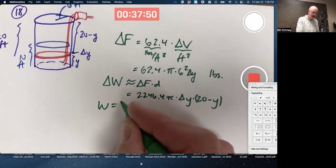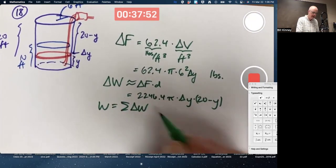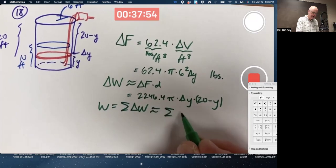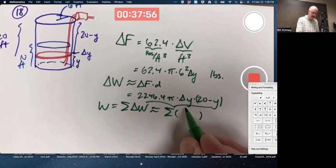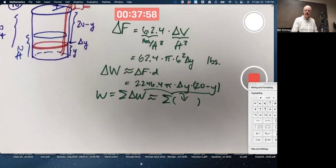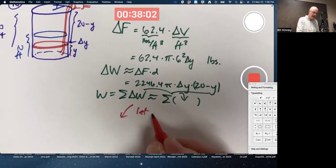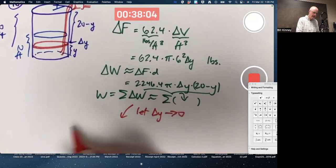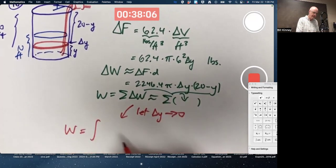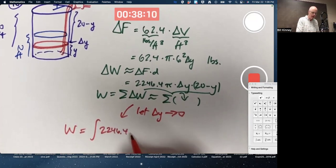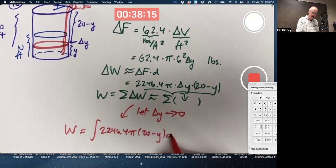The total work, then, is the sum of the small works. Approximately a sum of these things here. Let delta y go to zero. The total work is an integral of 2,246.4 pi times (20 minus y) dy.